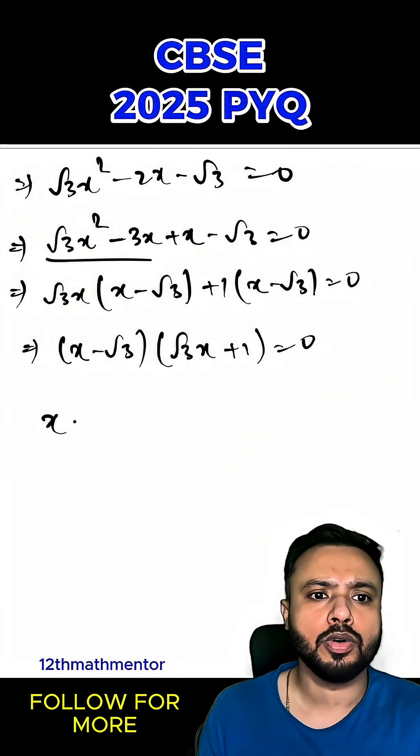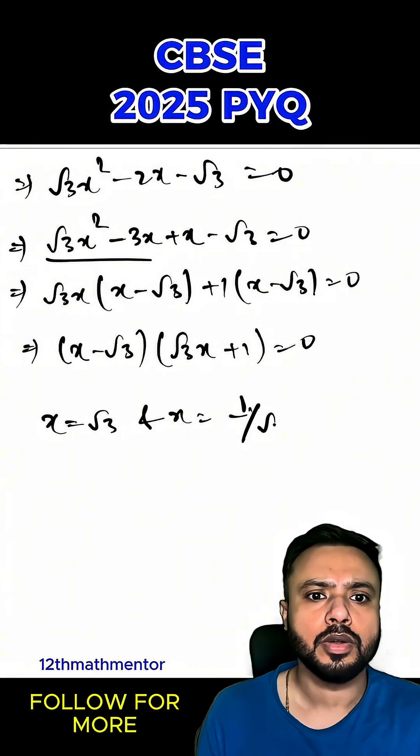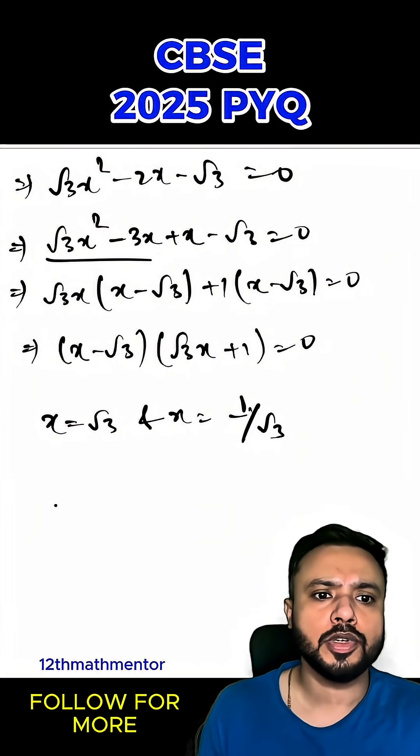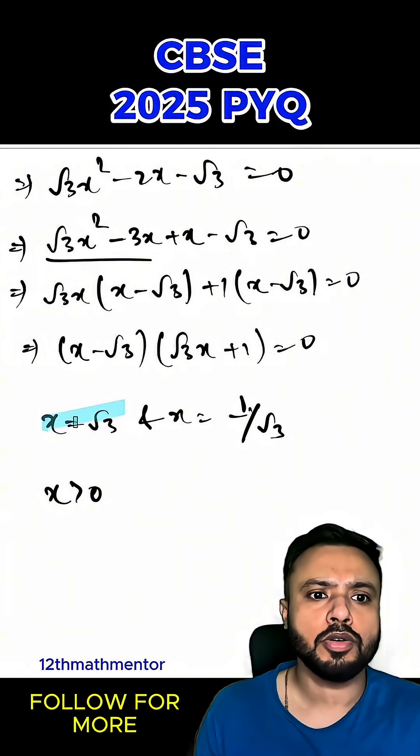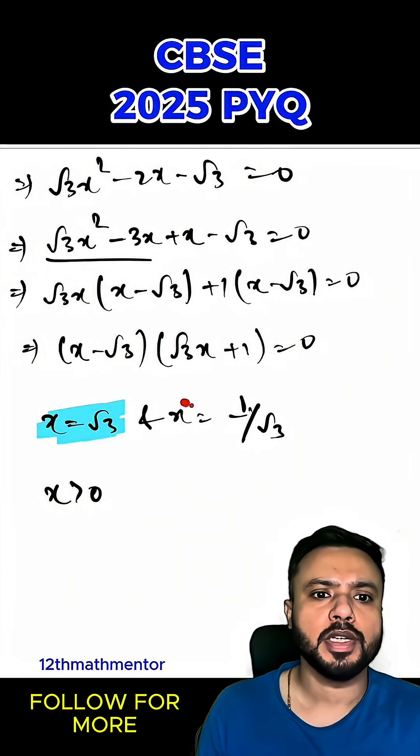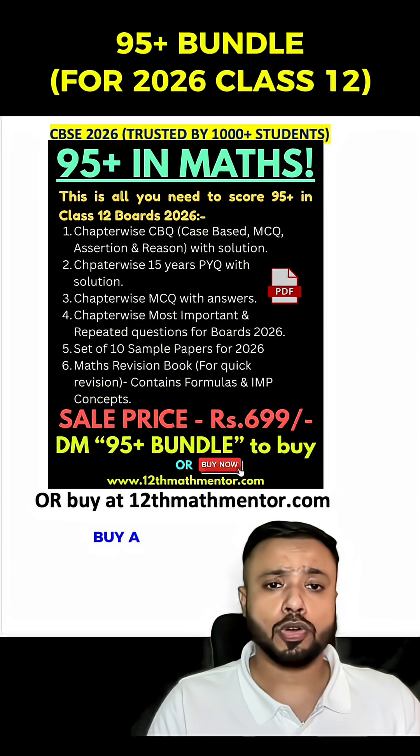Hence I get two values: x = √3 and x = -1/√3. Since x > 0 as given in the question, x = √3 is the answer and we reject x = -1/√3.